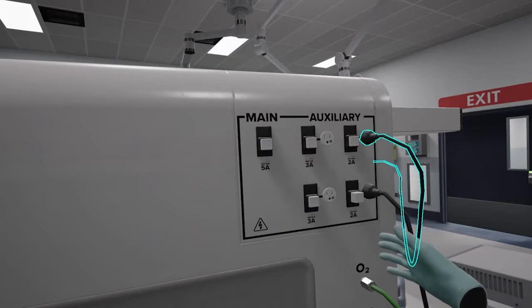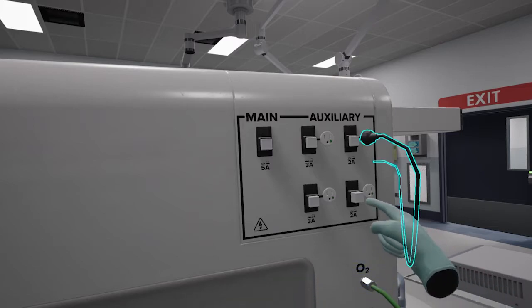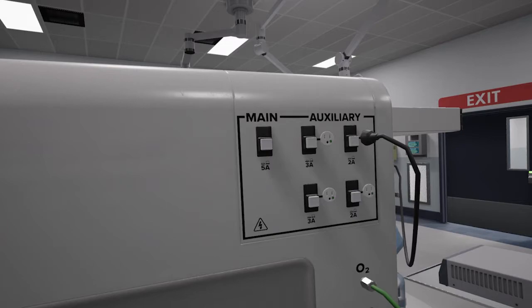So what we need to do in this case is unplug the electrocautery unit, we'll ask the circulator to plug it into another outlet somewhere, and we can re-engage our circuit breaker.